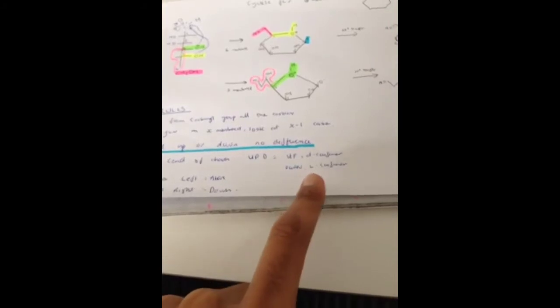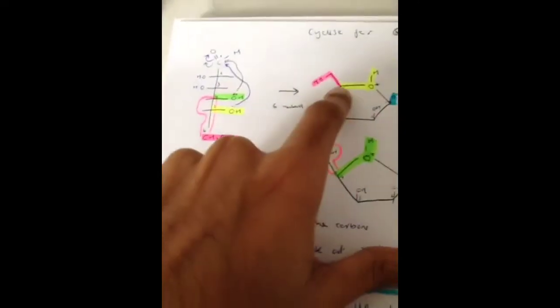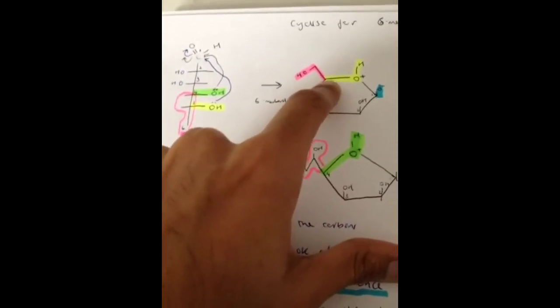So Upt basically means that hydroxyl if it's up it will be the D-conformer, then obviously you know what the other one will be. So down it will be L-conformer. Over here hydroxyl I've drawn it up so basically what it essentially will be is the D-conformer. Upt, just remember Upt.